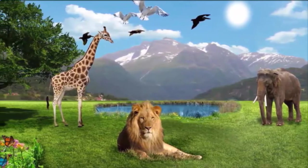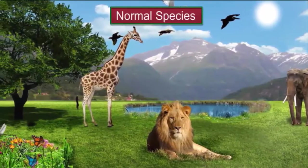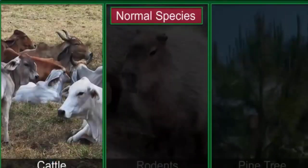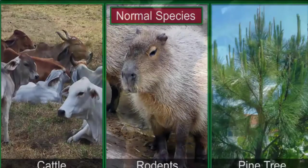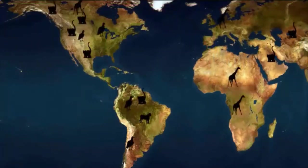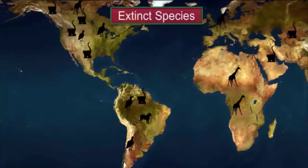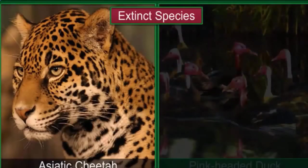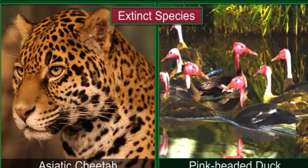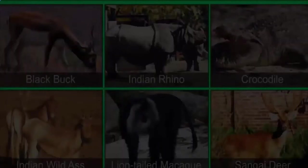Plants and animals whose population is sufficient for the survival of their species are called normal species. These include cattle, rodents, and trees like pine and sand. A species that cannot be found after prolonged search in its area of habitation is called an extinct species. Note that a species may be extinct from an area, a country, or the entire Earth. Some such species are the Asiatic cheetah and the pink-headed duck.